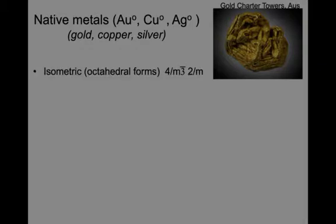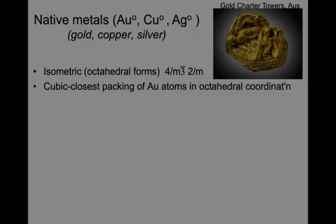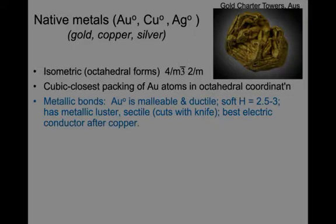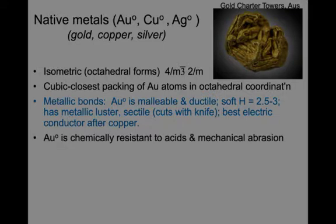They form isometric octahedral forms, and the bonds are metallic, so gold is malleable and ductile. It's quite soft, with a hardness of 2.5 to 3, has a metallic luster, is sectile and cuts with a knife, and is the best electrical conductor after copper. Silver is number three.